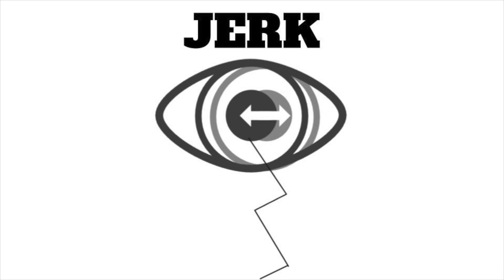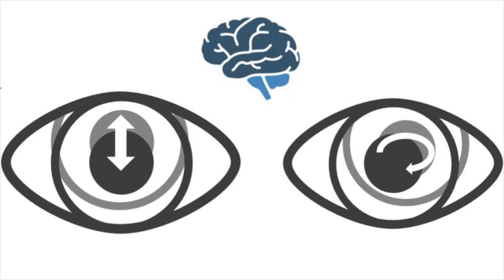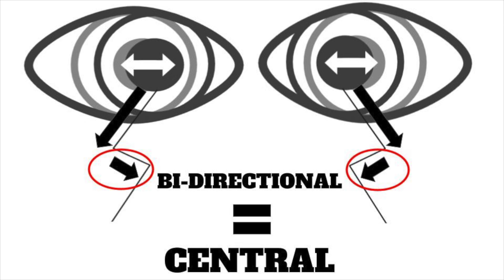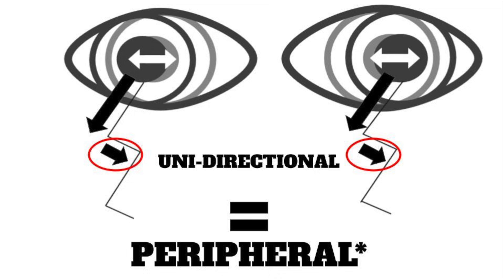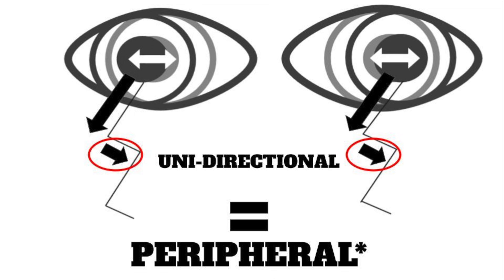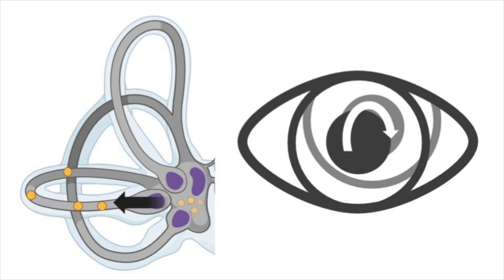Now we know what nystagmus is: moving slowly in one direction, quicker in the other — jerk nystagmus. Purely vertical or purely rotational is always central. Multidirectional is central. Unidirectional is almost always peripheral. Inducible nystagmus lasting less than a minute or two is either central positional vertigo — almost unheard of — or BPPV. And remember: BPPV nystagmus is not purely rotational and not purely vertical; it's vertical rotatory, and almost always unidirectional. Now you're experts.